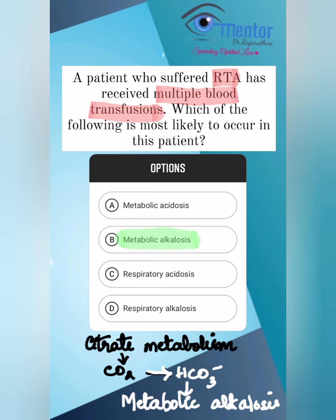Bicarbonate means alkalosis, so metabolic alkalosis. Now the next one, B — it binds. It binds to magnesium and also calcium. When it binds to magnesium it causes hypomagnesemia, and when it binds to calcium it causes hypocalcemia. So citrate results in metabolic alkalosis, hypocalcemia, and hypomagnesemia.